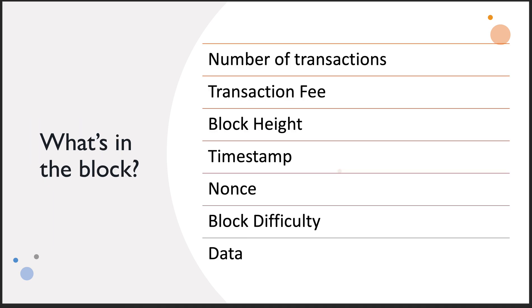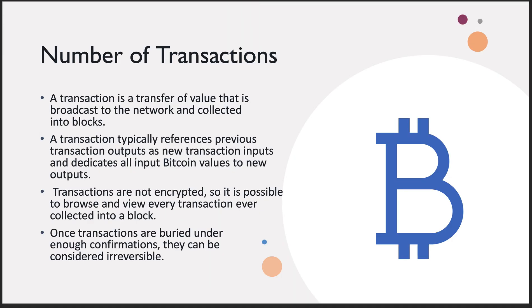What's inside the block is really interesting because there are a number of different data fields: number of transactions, transaction fee, block height, timestamp, nonce, block difficulty, and data. The number of transactions is basically a transfer of value broadcast to the network and collected into blocks. In Bitcoin, that would be the number of coins — the value.